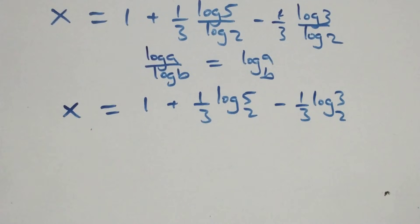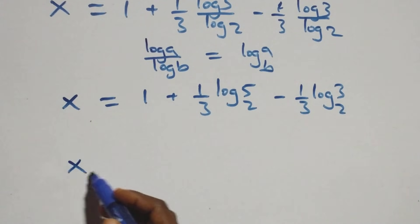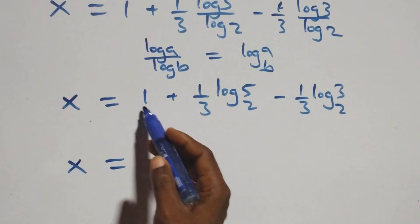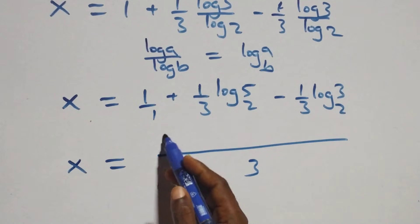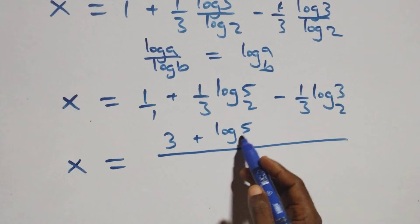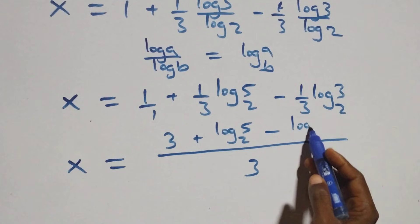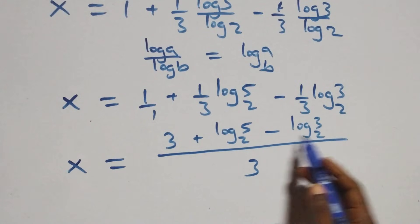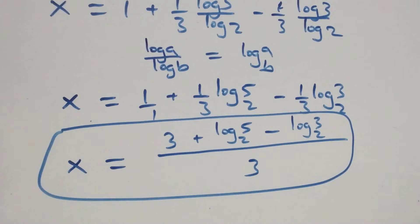We bring this together as one fraction with denominator 3: x equals (3 plus log₂(5) minus log₂(3)) over 3.